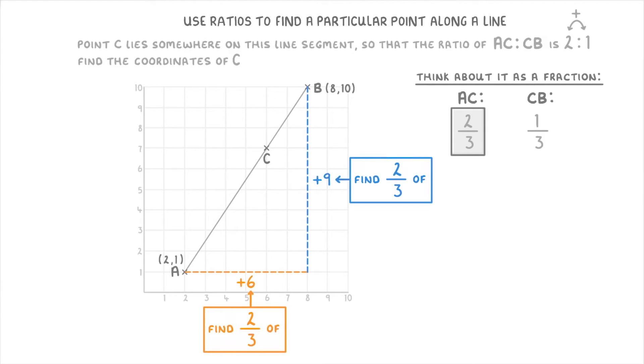So for the x axis, we do 2 thirds of 6, which is 4. And for the y axis, we do 2 thirds of 9, which is 6.